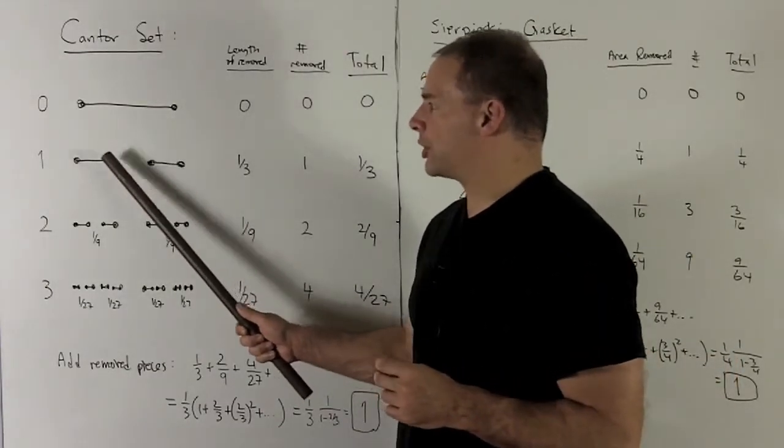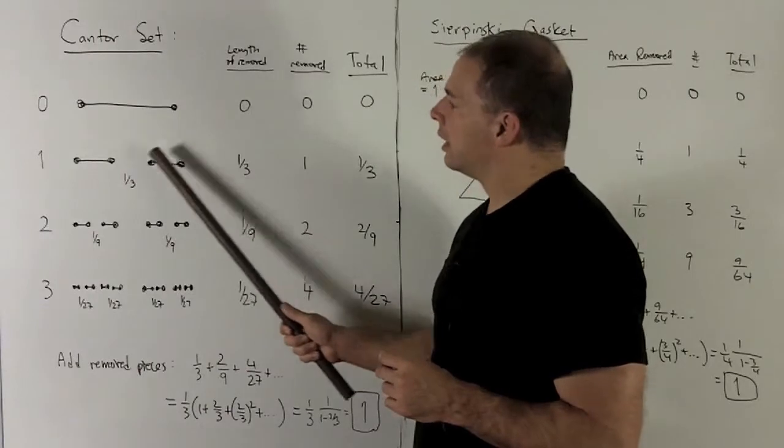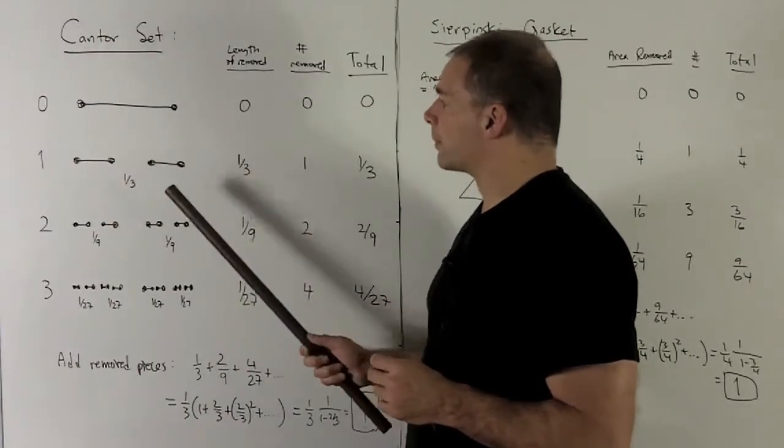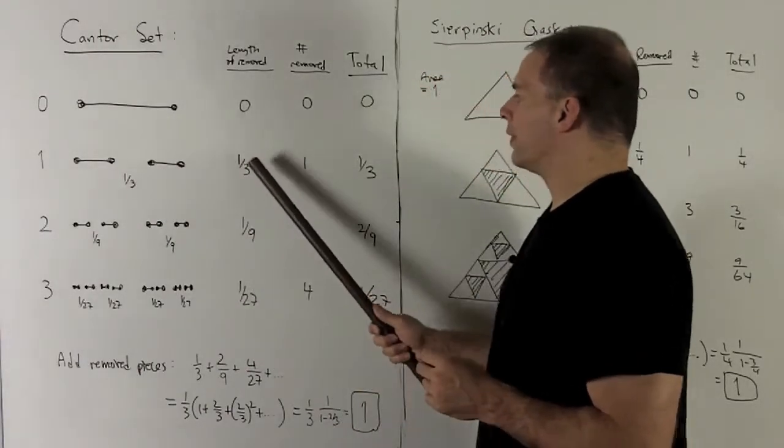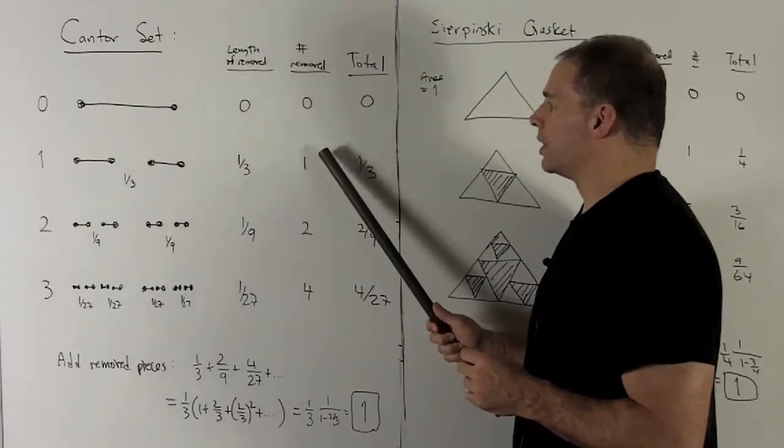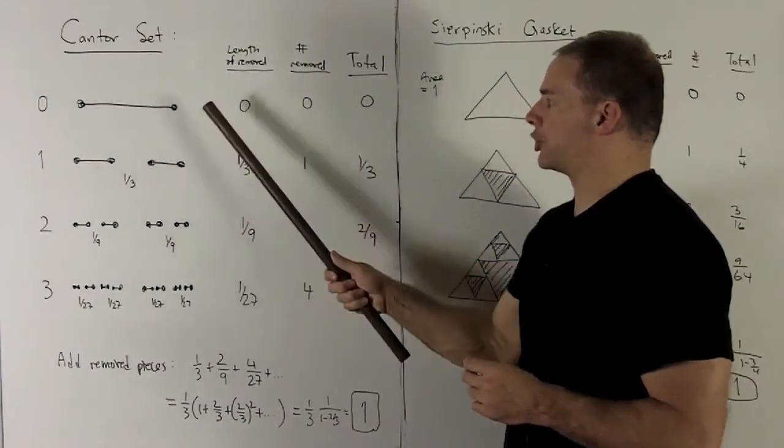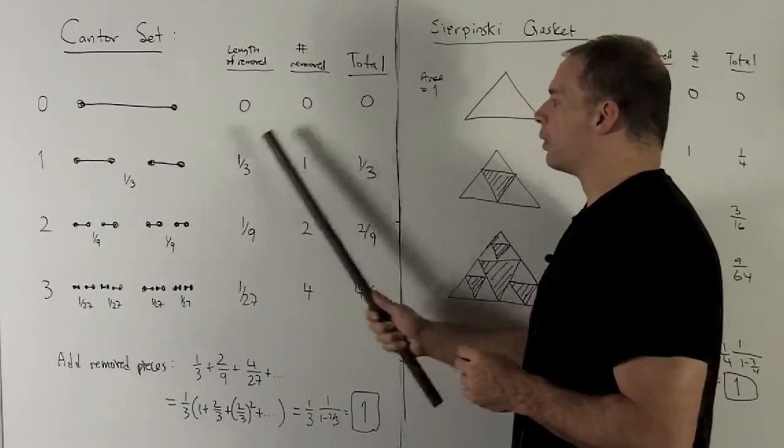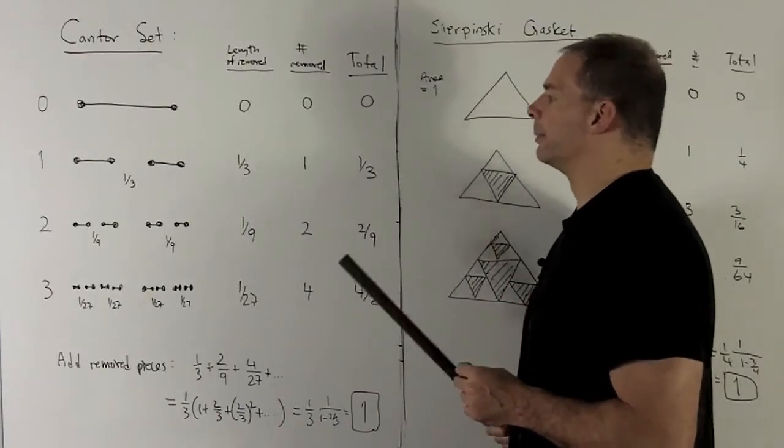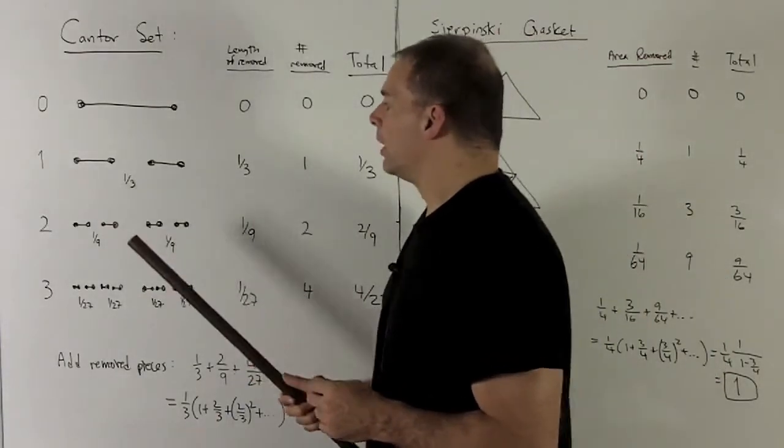...take out the middle third. Here we're going to make sure we leave the endpoints in what remains. So I'm going to have one third being taken out of one segment—the original—so the total amount I remove is going to be one third.